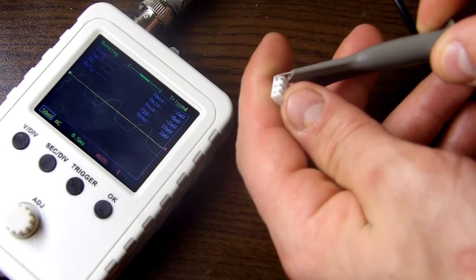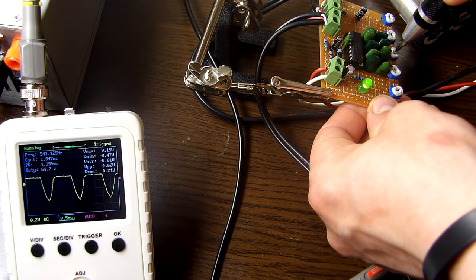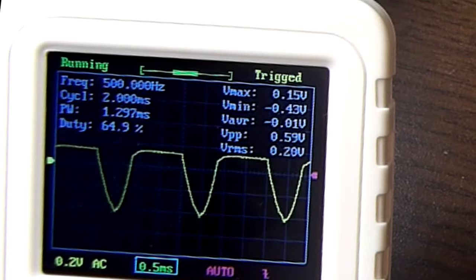Let's connect the output of the LA3600 to the oscilloscope. By rotating the potentiometers, we can see how the sine wave gets distorted or slightly offset.